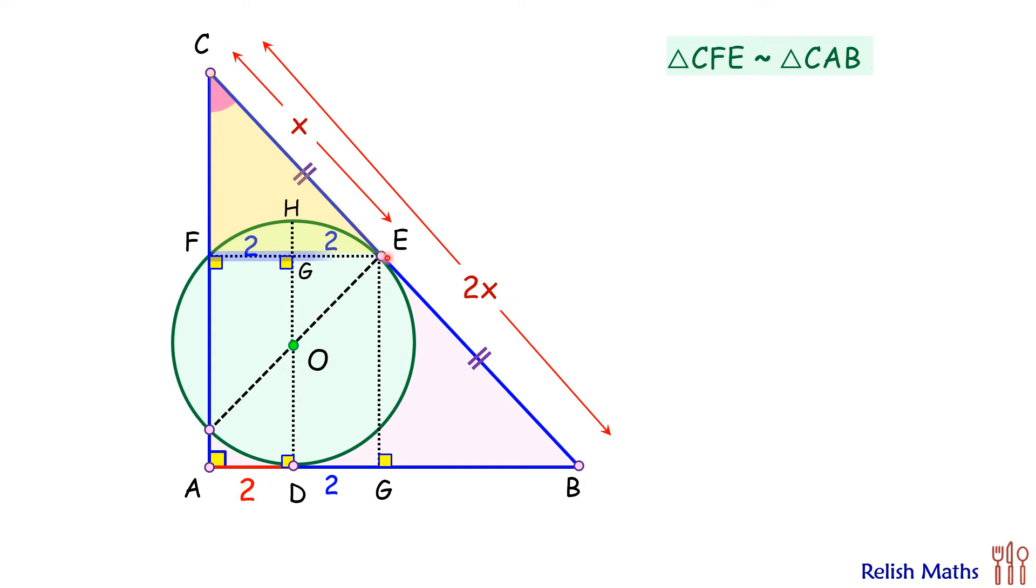So if FE is 4 cm then full length AB will be 8 cm. Here AG is 4 and thus remaining length GB will be 4 cm.